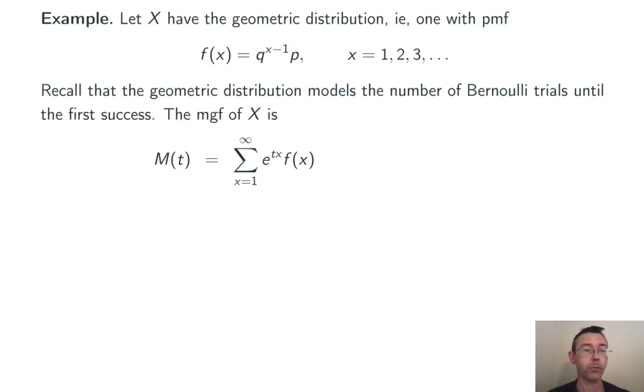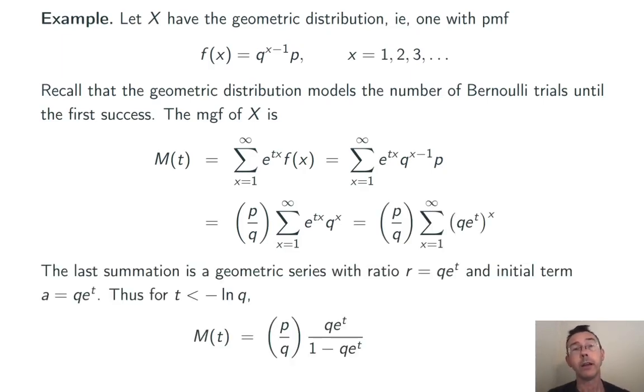Using that definition from a couple slides ago, the moment generating function sum from x equals 1 to infinity e^(tx) f(x) becomes this: e^(tx) q^(x minus 1) times p, just literally plugging and chugging. Next I'm going to factor out p over q so that the entire inside of that summation is something to a power of x.